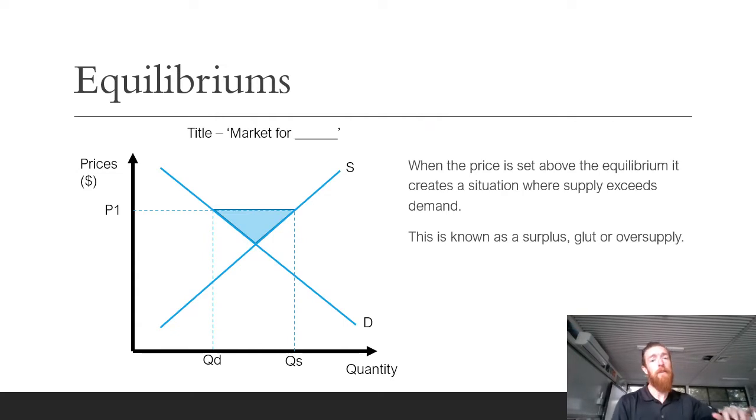When the price is set above the equilibrium price, we have a situation where supply exceeds demand. You can see here when P1 is set above the equilibrium price, demand is at this point and supply is at this point. When there is more supply than demand, we call this a surplus, a glut, or an oversupply. I usually just call it a surplus.